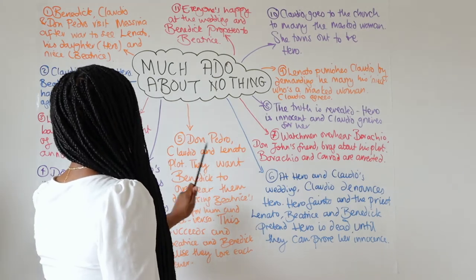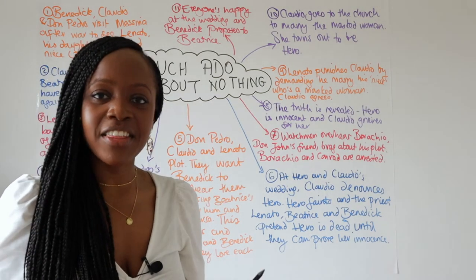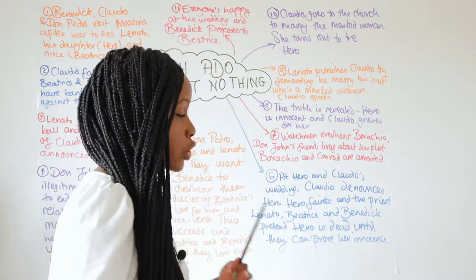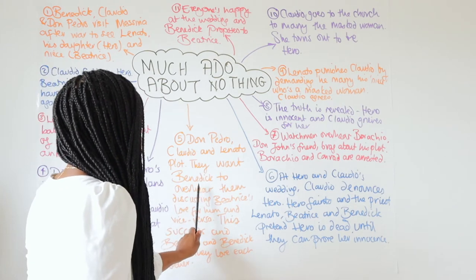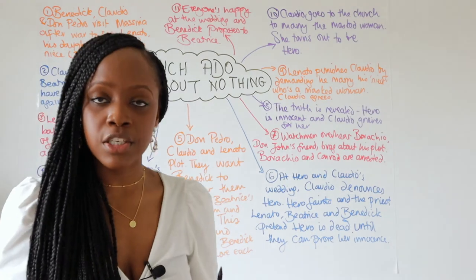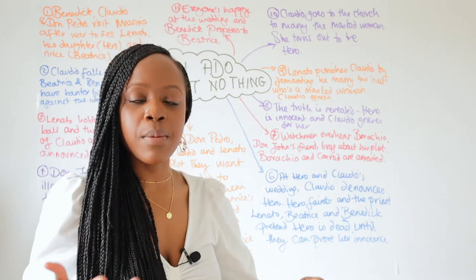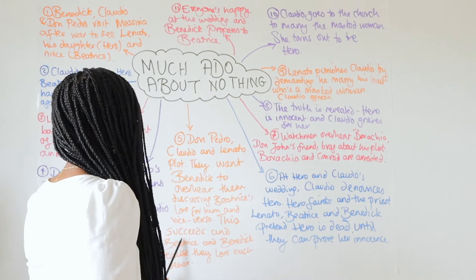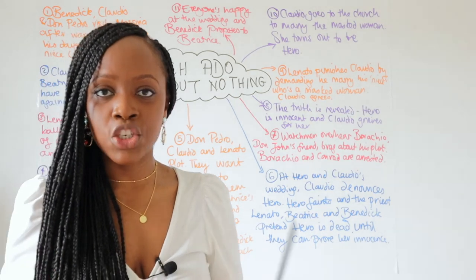Separately, there is another plot taking place. Don Pedro, Claudio and Leonato plot together, deciding that they want both Benedict and Beatrice to believe in love. They arrange for Benedict to overhear them discussing Beatrice's love for him, and vice versa — Beatrice overhears them talking about Benedict's love for her. This plot succeeds, and both Beatrice and Benedict realise that they love each other.